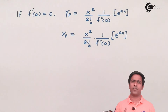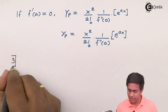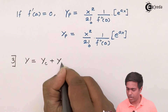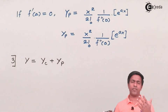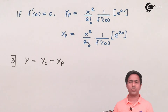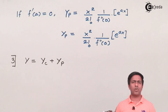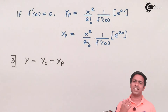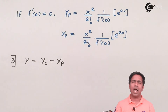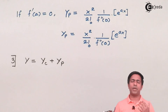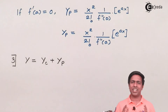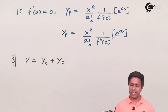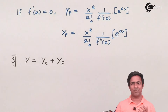We now have yc, the complementary function, and yp, the particular integral. The final step is: the complete solution y = yc + yp. Copy the values of yc and yp obtained in the previous steps to get the final solution. This is the process to solve the higher order differential equation whenever the right hand side is an exponential function. Subscribe to ekin.com for more engineering mathematics videos, share with your engineering friends, and watch the next video where I'll solve a numerical based on this concept. Thank you.